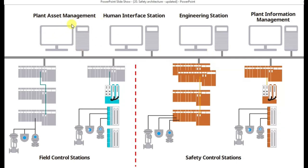Plant asset management is for gathering very critical parameters from the plant and reporting to higher-level management. It holds plant asset data and gives performance reports about different processes and different equipment — maybe high-capacity equipment like boilers and critical vessels.